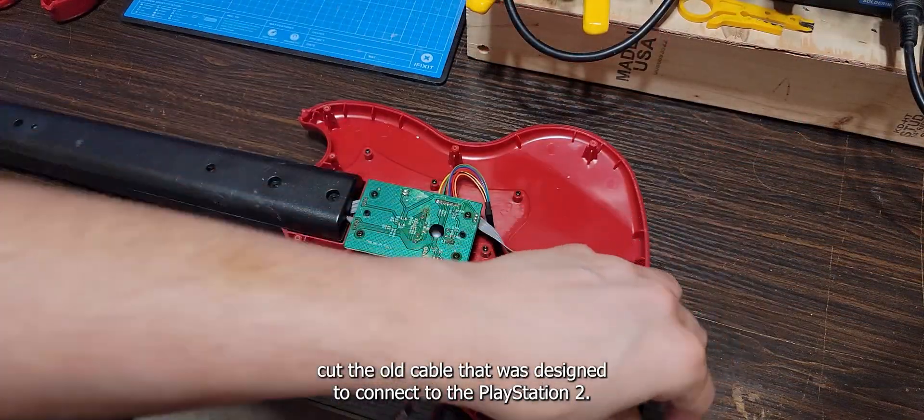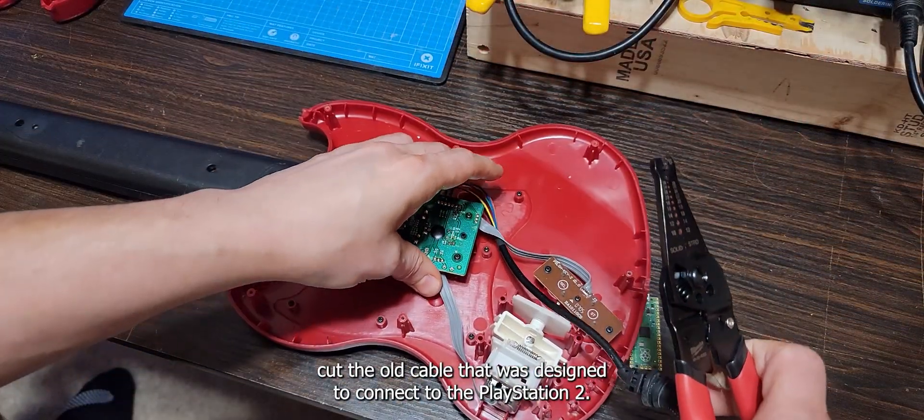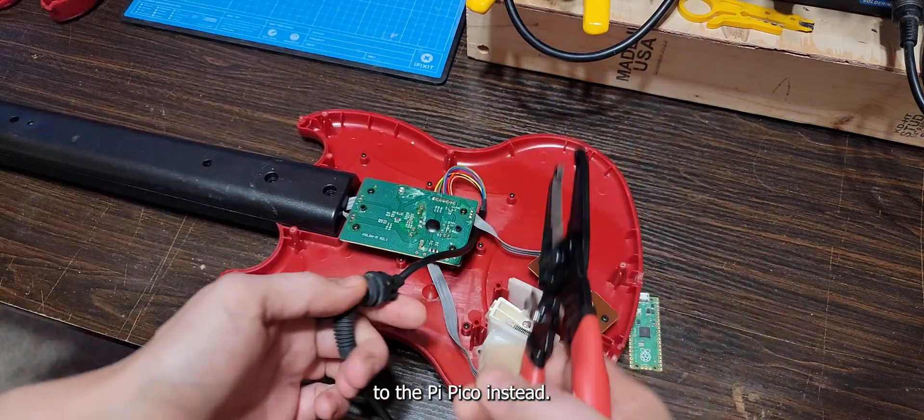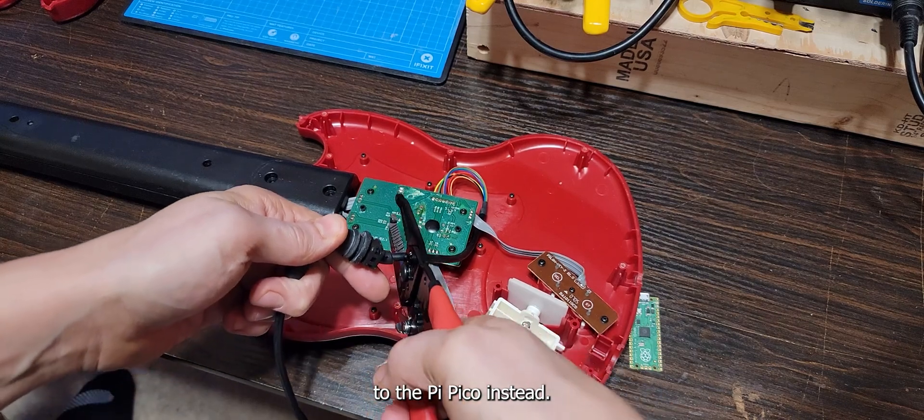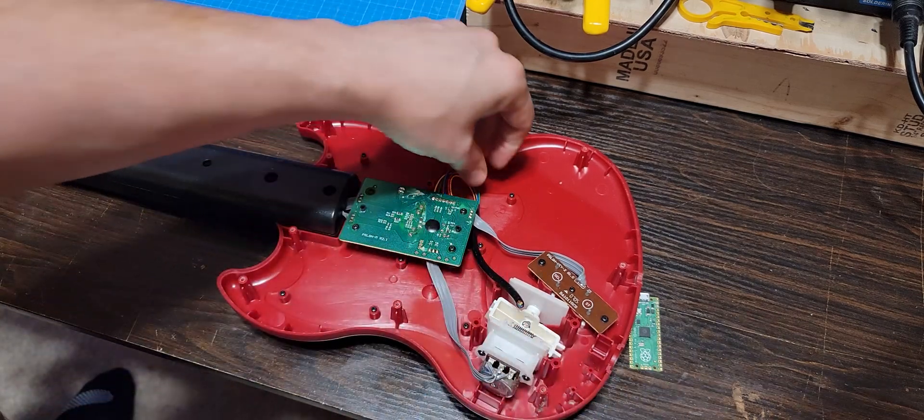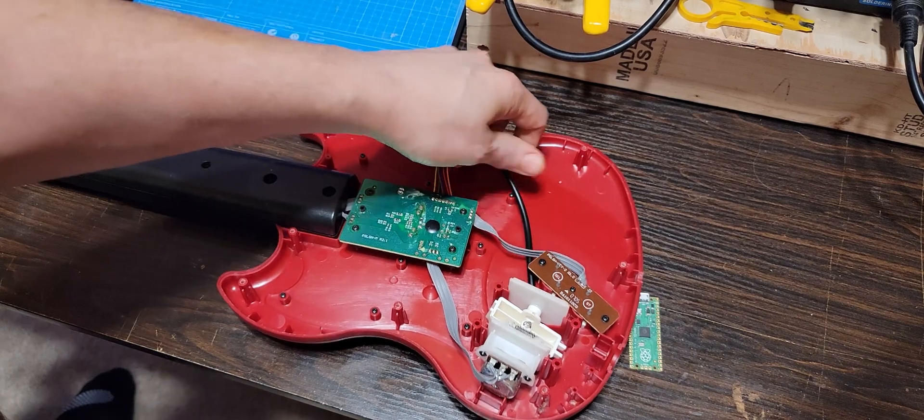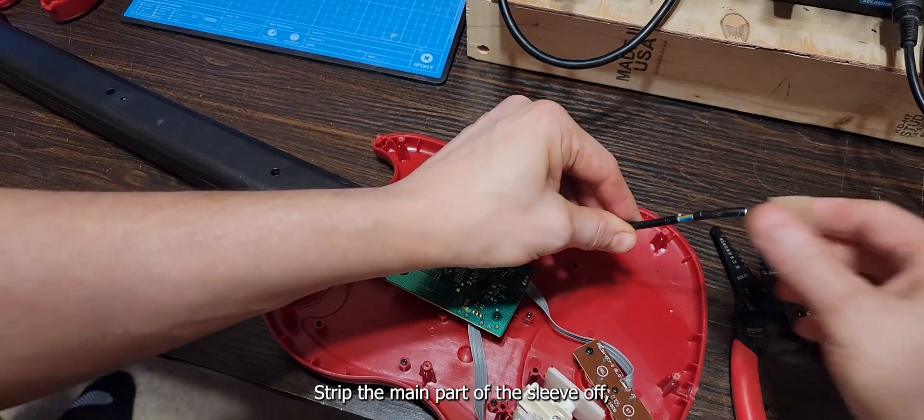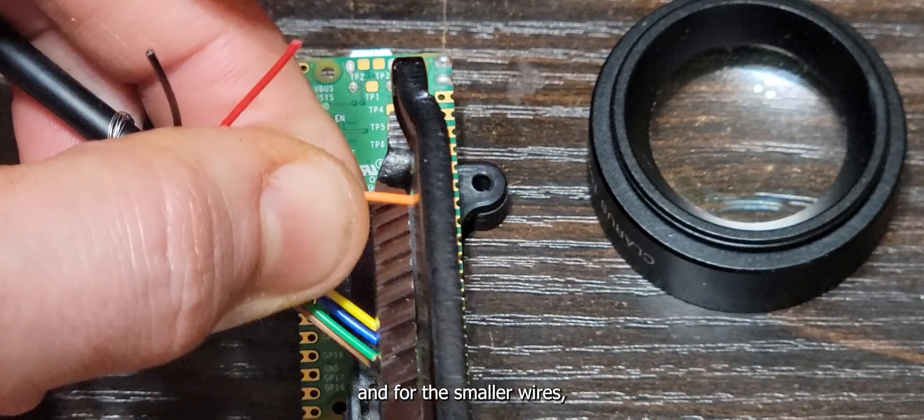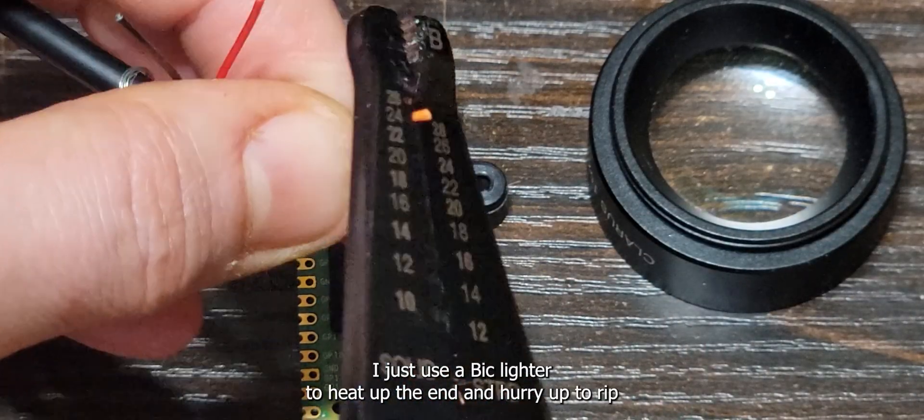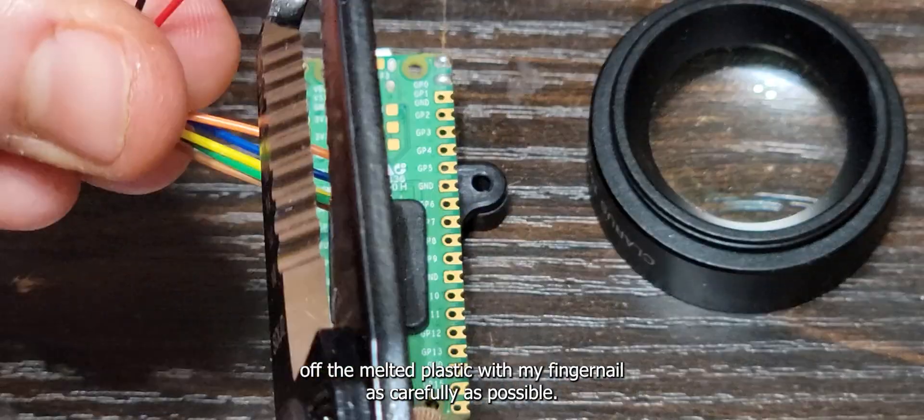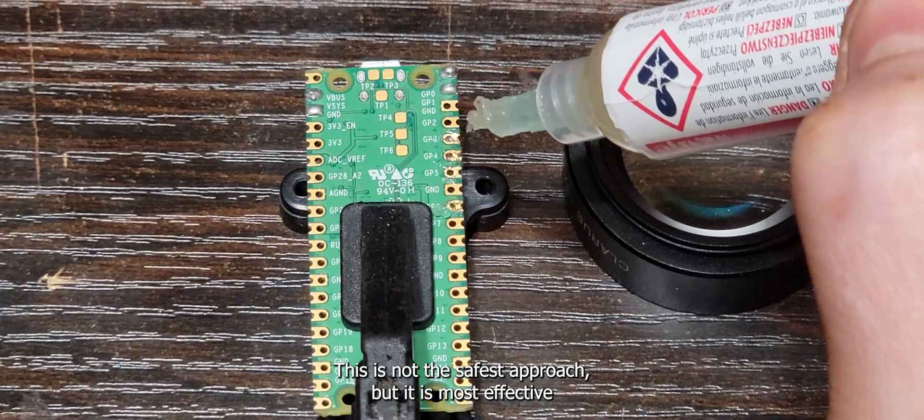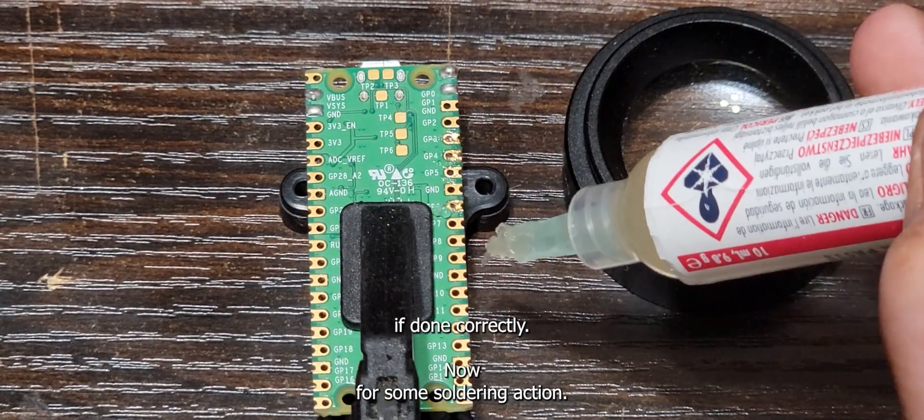A good starting point is to cut the old cable that was designed to connect to the PlayStation 2. I make sure to leave enough cable to connect the PCB of the guitar to the Pi Pico instead. Strip the main part of the sleeve off. And for the smaller wires, I just use a Bic lighter to heat up the end and hurry up to rip off the melted plastic fingernail as carefully as possible. This is not the safest approach, but it is most effective if done correctly.